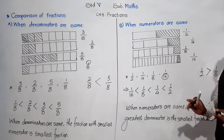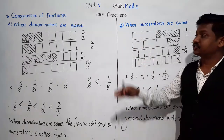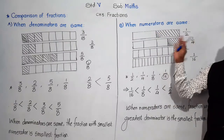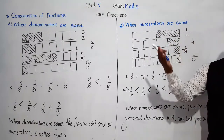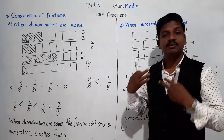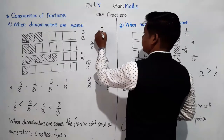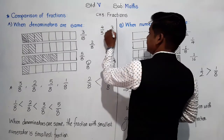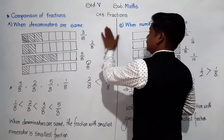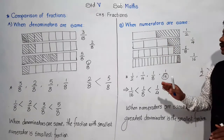So: when denominators are same, the fraction with the smallest numerator is the smallest fraction. And when numerators are same, opposite of that — the fraction with the greatest denominator is actually the smallest fraction. In this way we compare fractions. There is a third type when both numerators and denominators are different, like 4/5 and 3/2, which we will learn afterwards.